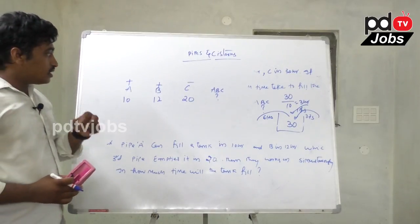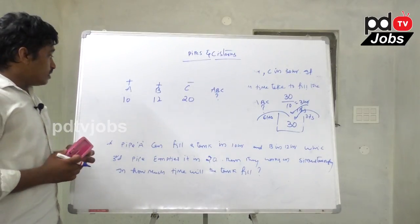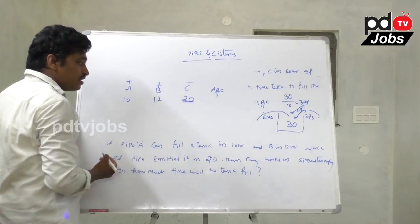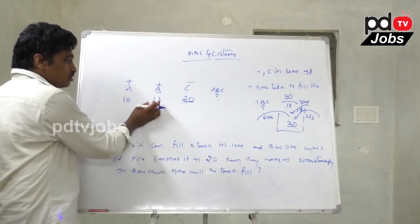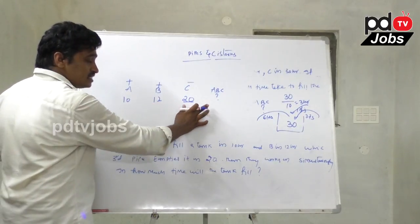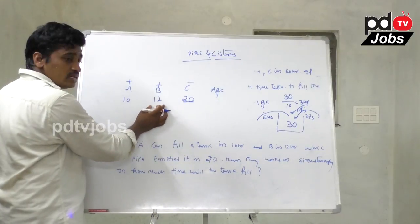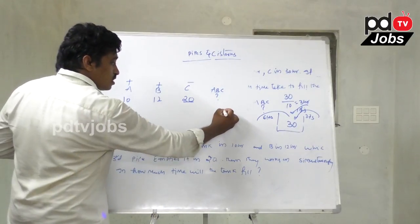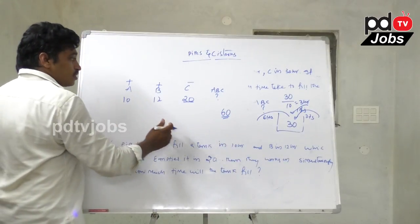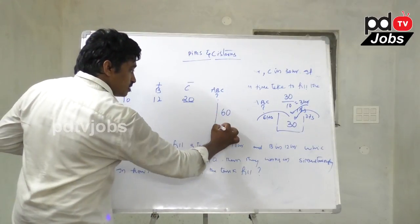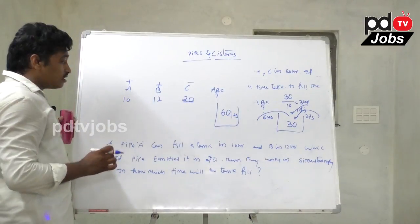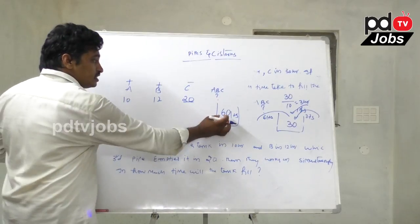Given times: 10, 12, and 20 hours. LCM of 10, 12, and 20 is 60. So total tank capacity is 60 liters.